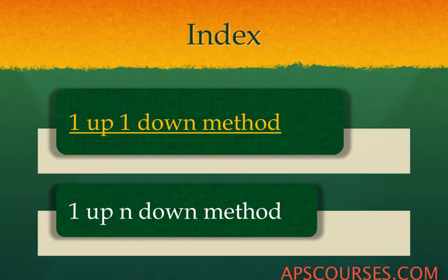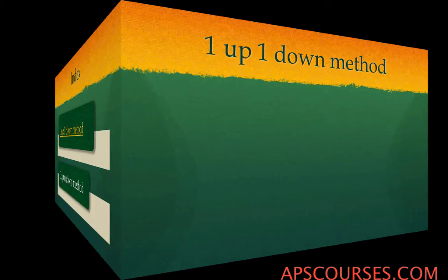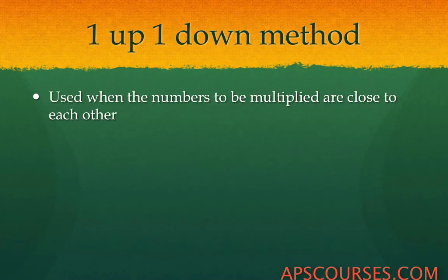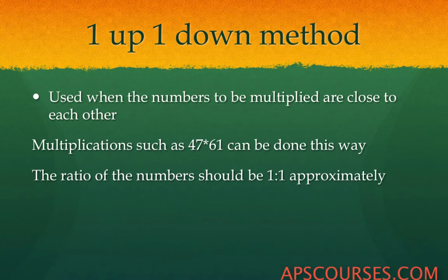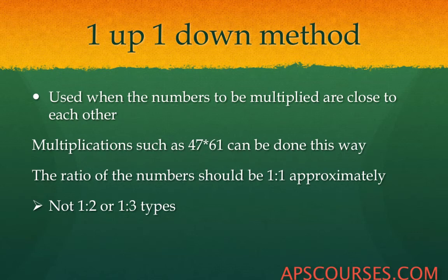Let us start with the first method, the 1up1down method. This method is used when the numbers are close to each other. For example, in 47 multiplied by 61, the ratio of the two numbers is approximately 1 is to 1.3, which we can consider approximately 1 is to 1. This method cannot be used when the ratio is 1 is to 2, 1 is to 3, or 1 is to 4 or anything of that sort.